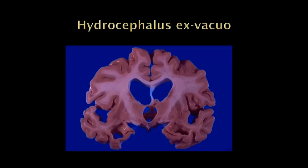In an autopsy, this is what hydrocephalus ex vacuo looks like: big ventricles, but not under increased pressure because of all the atrophy. This is the sylvian fissure, this is the third ventricle, this is the temporal horn of the lateral ventricle — and the brain is just much smaller from atrophy.